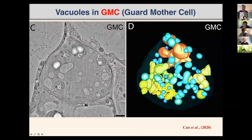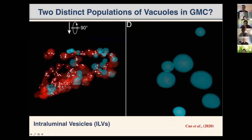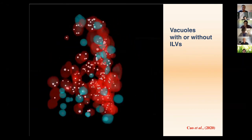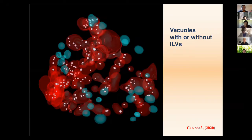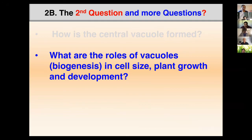Something quite new and interesting: we color-coded two different populations of vacuoles. The red ones contain intraluminal vesicles, but the green ones do not contain any intraluminal vesicles. This means they may be coming from two different sources — something we still need to figure out. In the model, the two color-coded vacuole populations differ: one has intraluminal vesicles and the other does not.